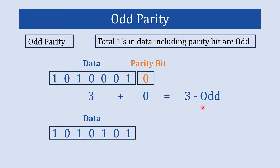Here is another example. The data has four ones. If we make the parity bit one, then four plus one gives us five, which is again an odd number. So this is how we make odd parity.